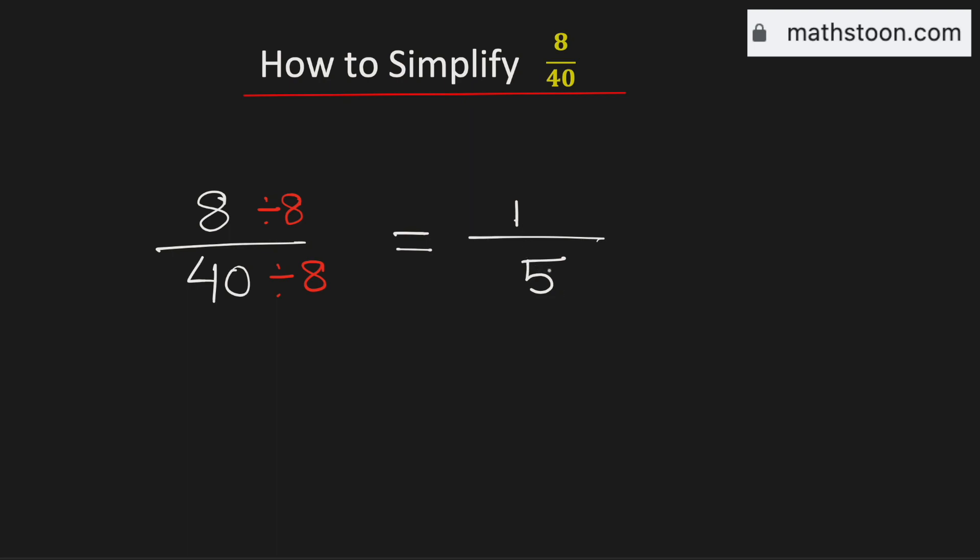So we say that 1 over 5 cannot be simplified further. And it is the simplified reduced form of the fraction 8 over 40. And this is our final answer.